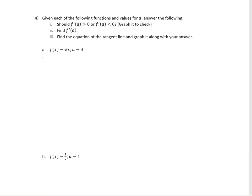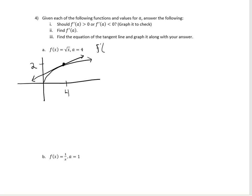The first thing we're going to do is graph this. The square root of x looks like this. When a equals 4, my y value will equal 2. And the slope of the tangent line, if I look at it from left to right, is increasing. So I know that f prime of 4 should be greater than 0, so it should be positive.